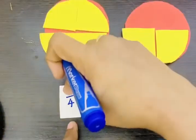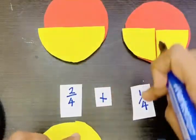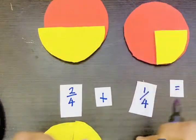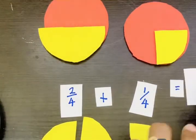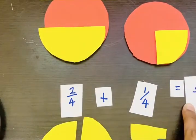For fraction addition, the denominators should be the same. Now we can easily add the numerators: 2 plus 1, that is 3 by 4. This is the answer.